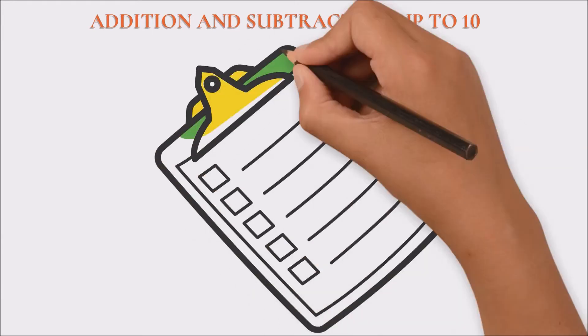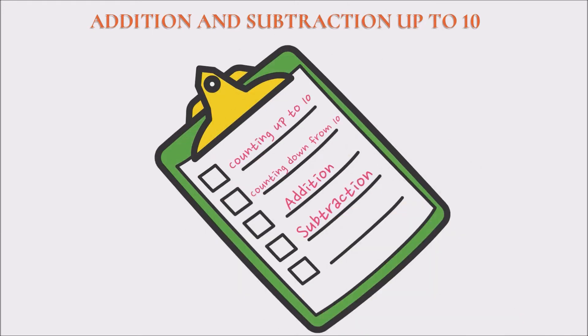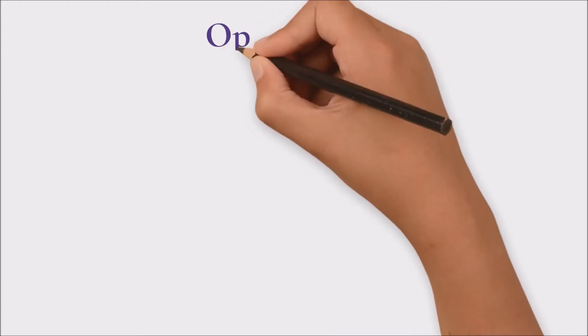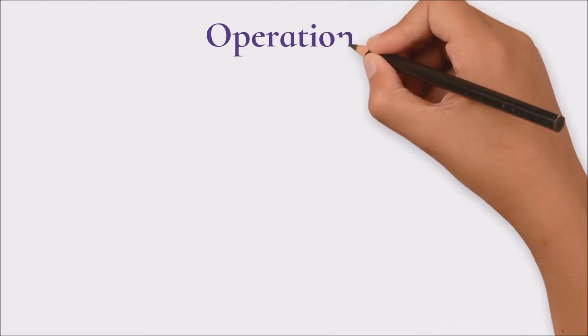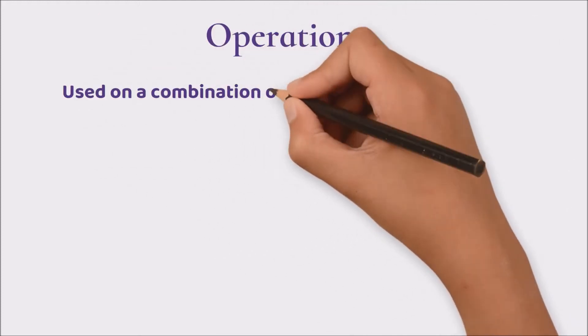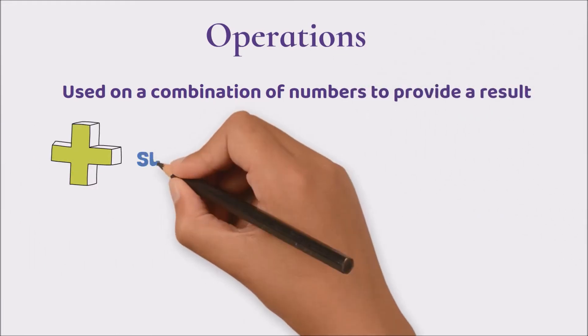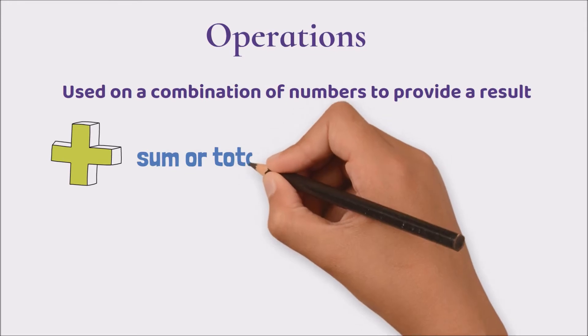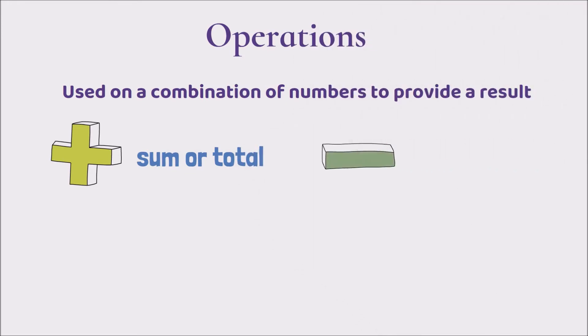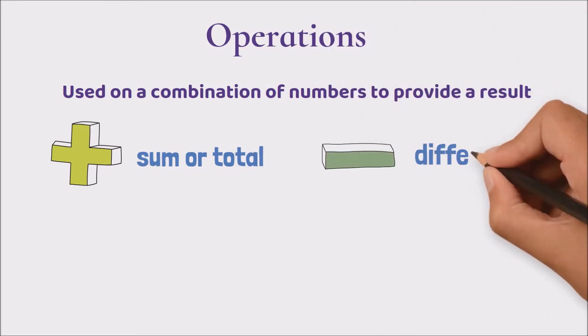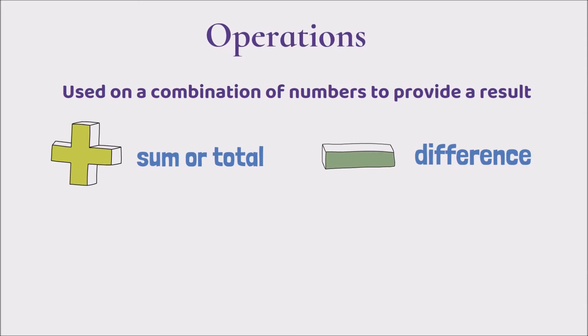Hey guys, so in today's video we'll be looking at addition and subtraction, which are known as operations in mathematics because they can be used on a combination of numbers to provide a result. With addition, the result is known as the sum or total, and with subtraction the result is called the difference. Today we will be learning the basics of these two operations by working with numbers up to 10.